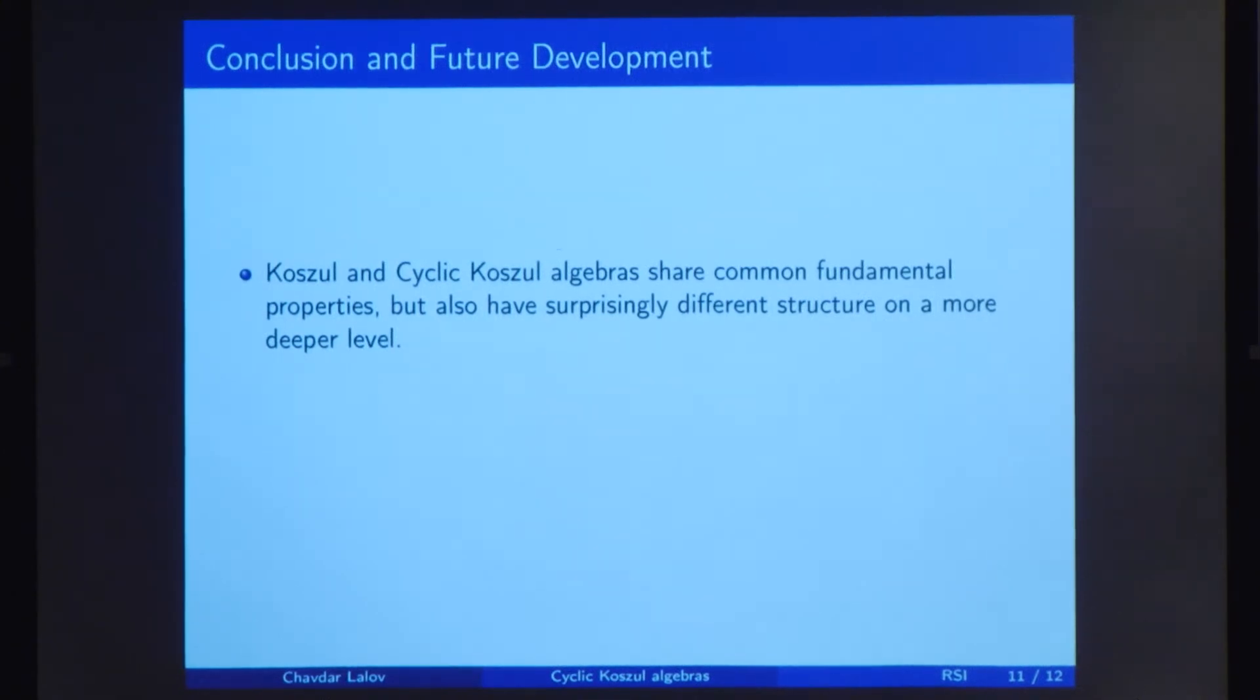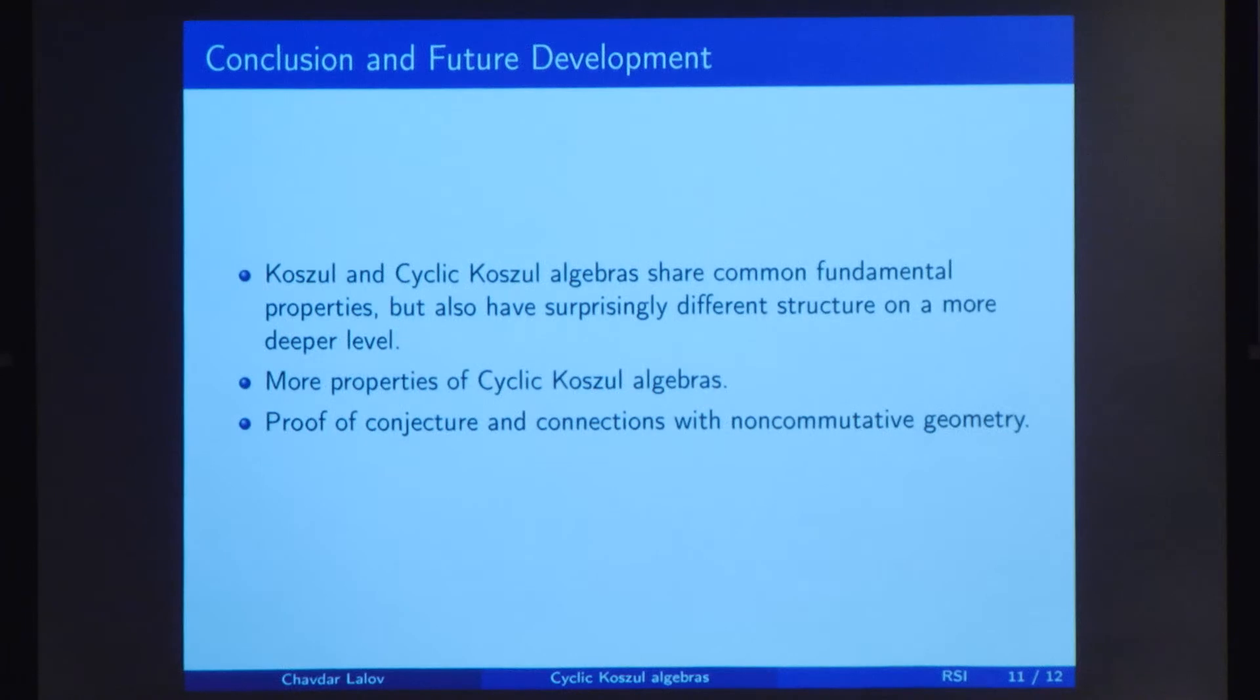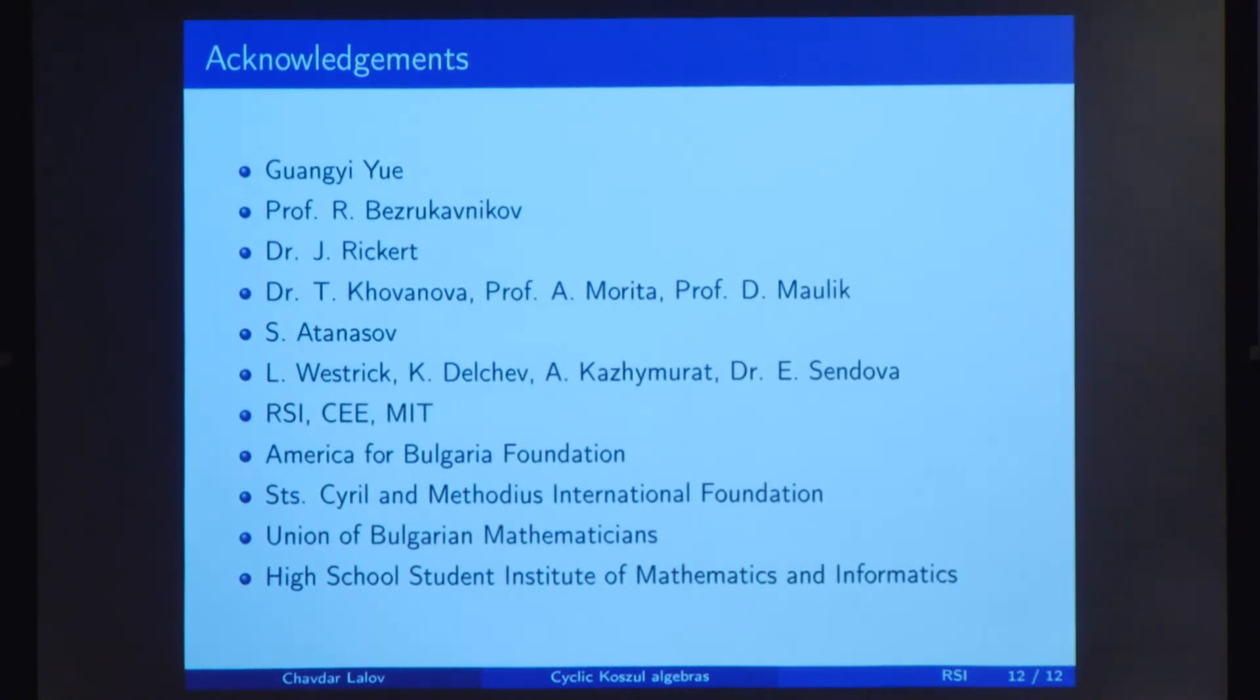In the future, we plan to study more fundamental properties about Kozul and cyclic Kozul algebras to see which properties are common for both of them and where they differ. And we want to prove the conjecture. Actually, we think that it is implied by two theorems in non-commutative geometry, although our observations are not rigorous and we will probably need several months to verify it. I would like to acknowledge all these people. My amazing mentor, Wange Yu, for all her constant support, and Professor Buzrukavnikov for suggesting this topic, as well as to Dr. Rickert for helping me with my paper and presentation, and to many other people, the math department at MIT and maybe many other alumni from RSI or just Bulgarians, which helped me polish my paper, as well as to RSI, CE, and MIT, all my sponsors for making this opportunity possible. Thank you.